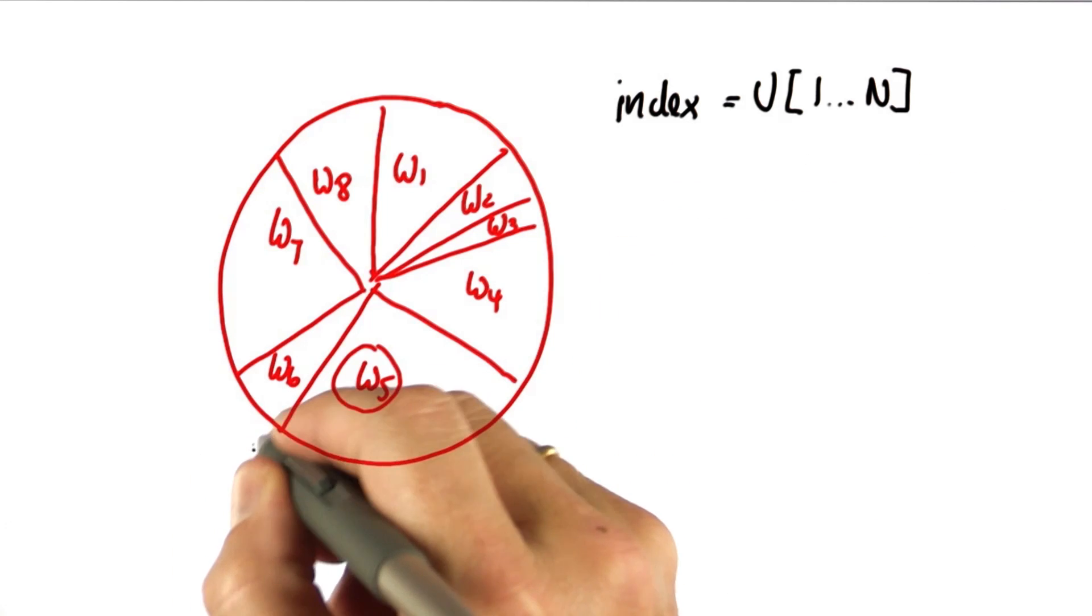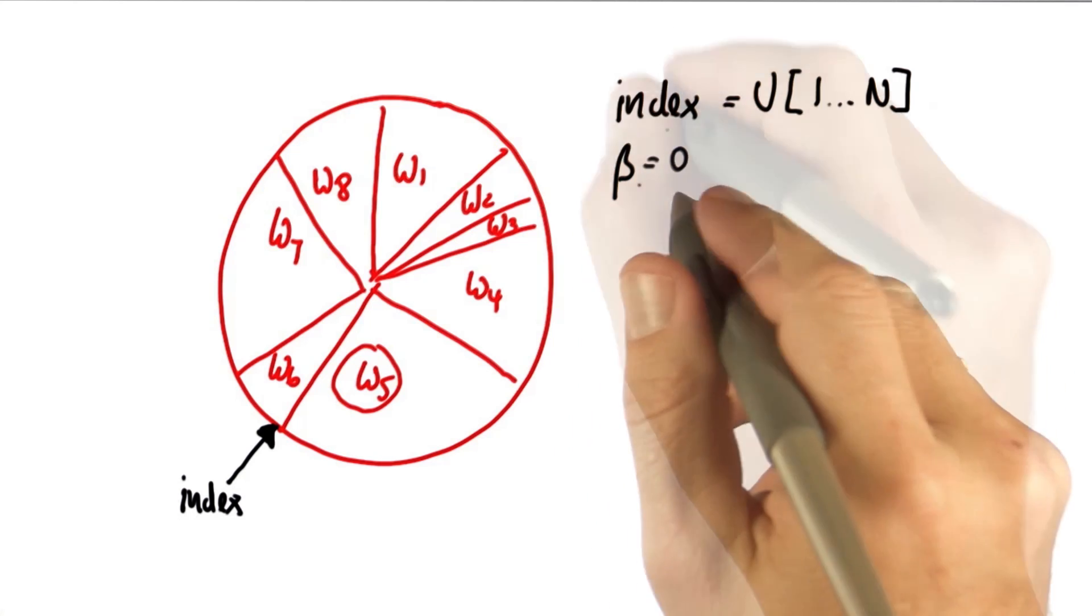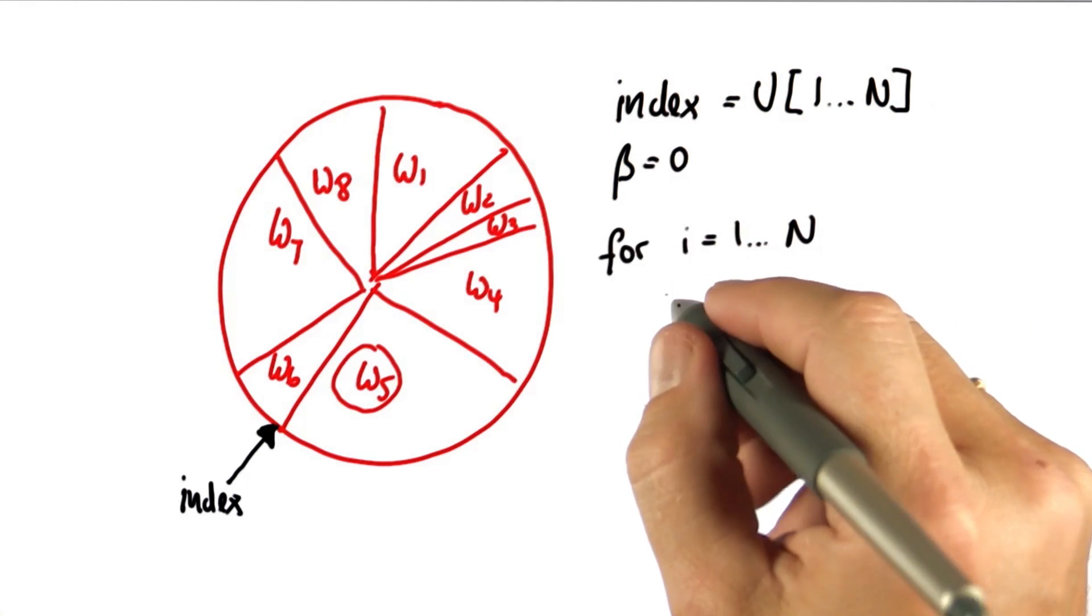So say we pick W6. Then the trick is that I'm going to construct a function beta that I initialize with 0, and to which I add...